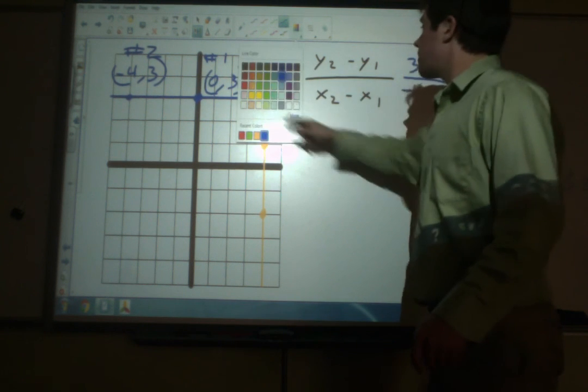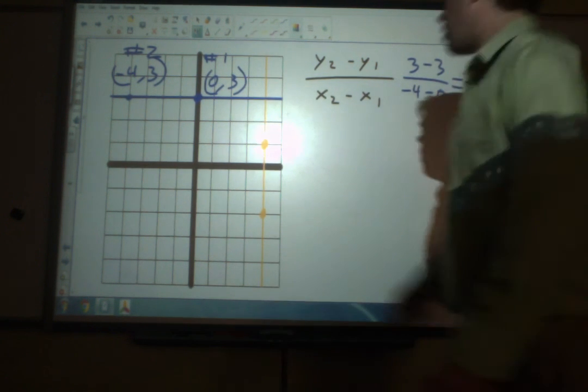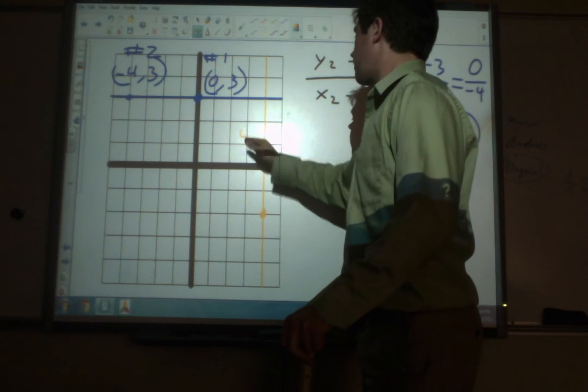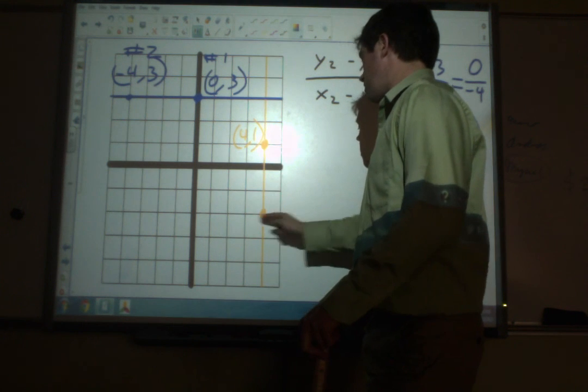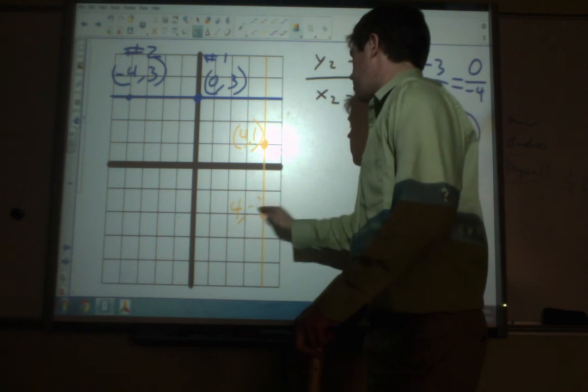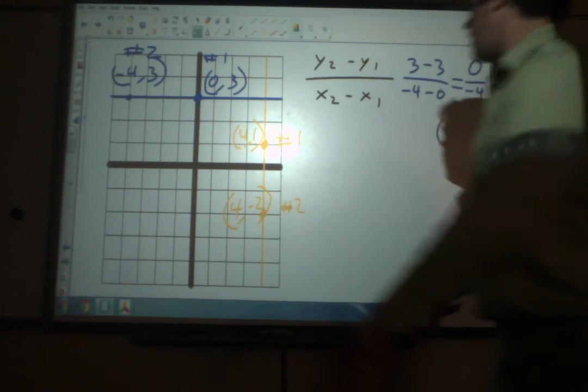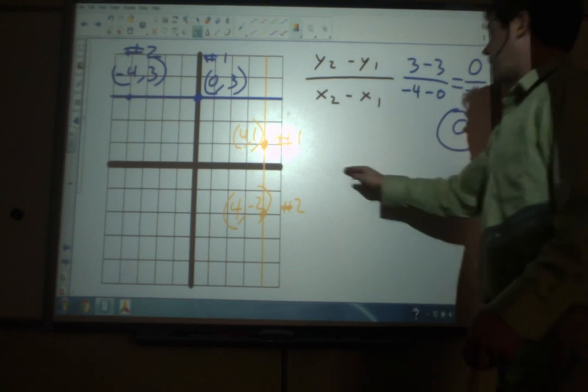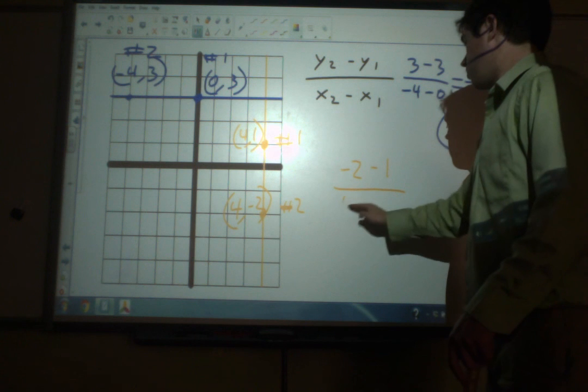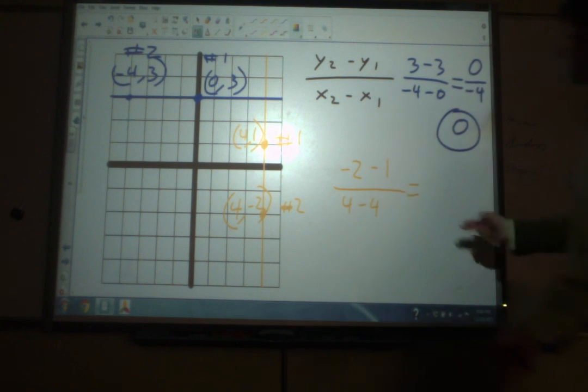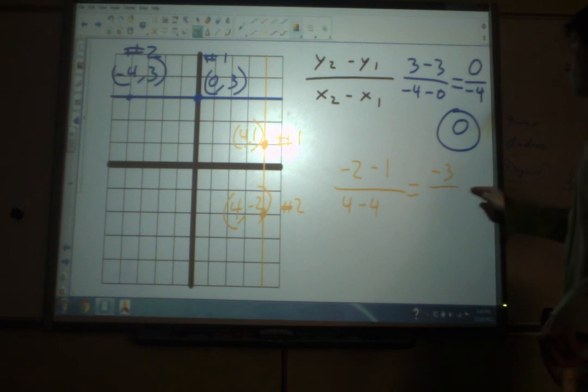Now let's look at the other one, this vertical line here. Our points are 1, 2, 3, 4. We've got 4, 1 and 1, 2, 3, 4. We'll call this point number 1, point number 2. And filling in the formula, we've got negative 2 minus 1 over 4 minus 4. Negative 2 minus 1 is negative 3. 4 minus 4 is 0. And you see we have negative 3 over 0.